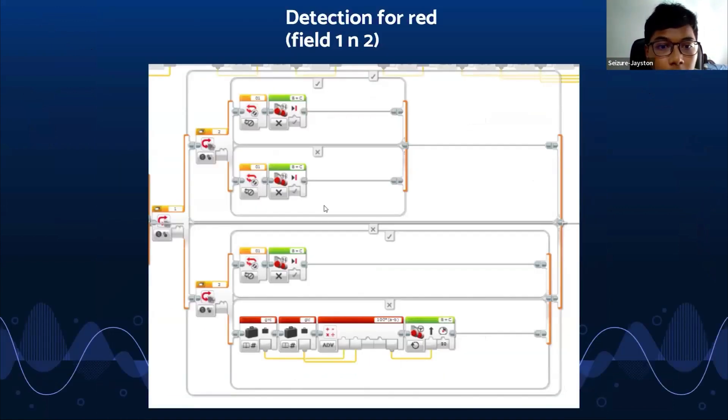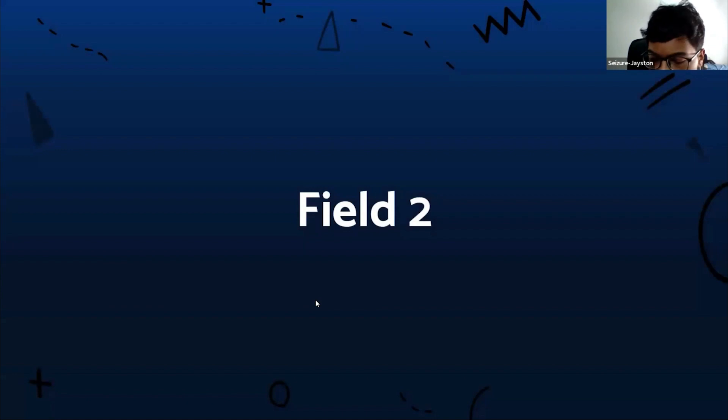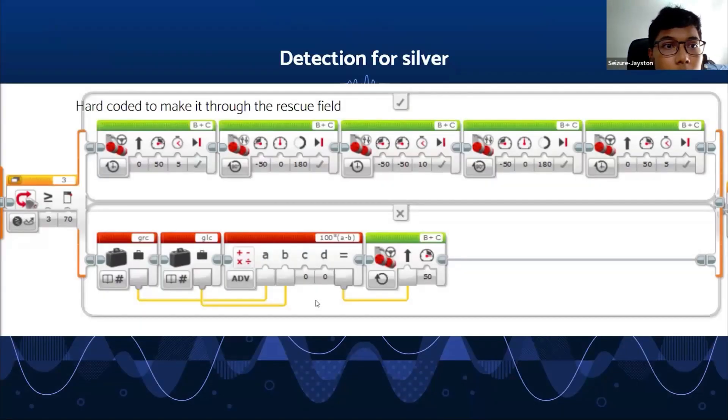Here you have the detection for red. This is for field 2. For silver detection, due to the lack of time, we decided to hard code it to make it through the rescue field and get points through line tracking instead of doing the evacuation zone. We detected silver by checking if all the silver RGB values would be higher than white.